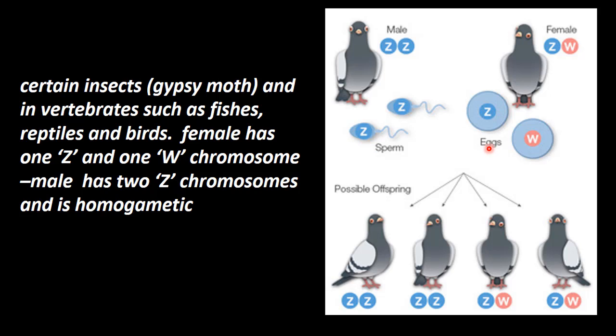Males produce sperm having Z chromosomes. Females produce two types of eggs: one having Z chromosome, another having W chromosome. When offspring carries Z and Z, it becomes male. When it has Z and W, it becomes female. In this condition, sex determination does not depend on the sperm, but depends on the egg.